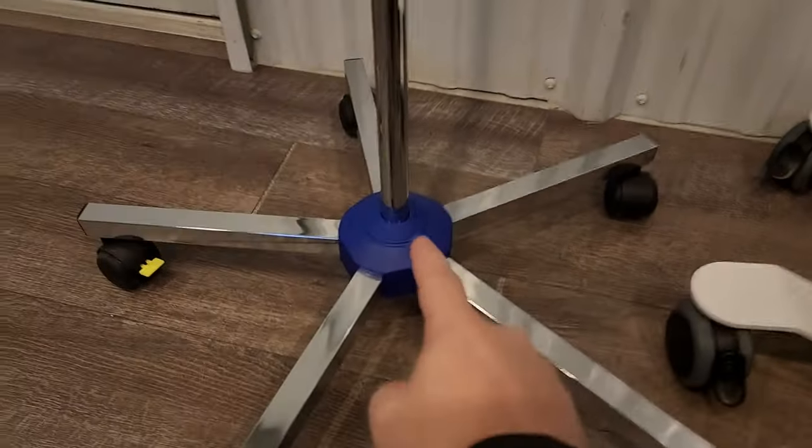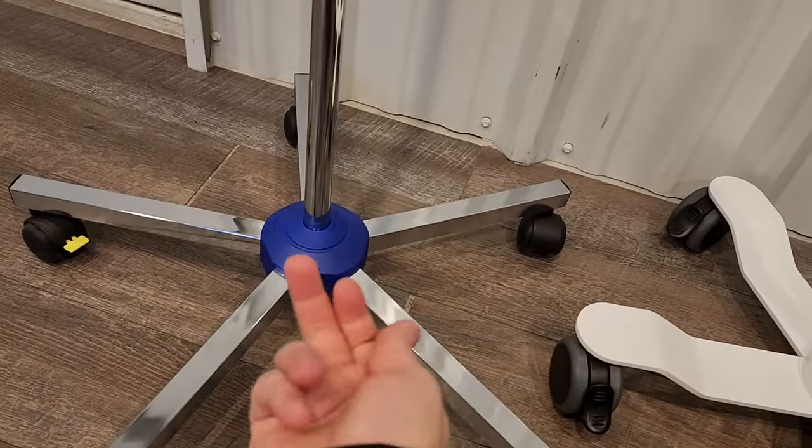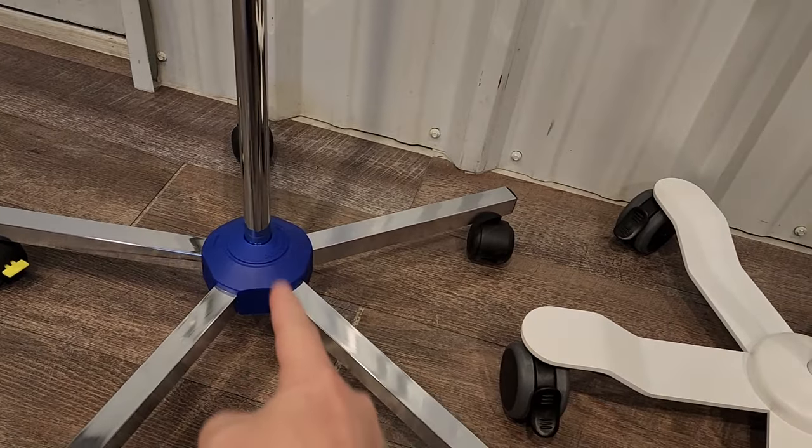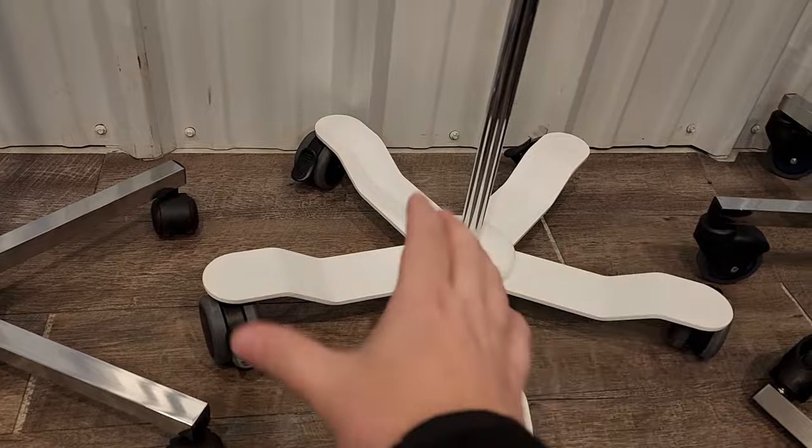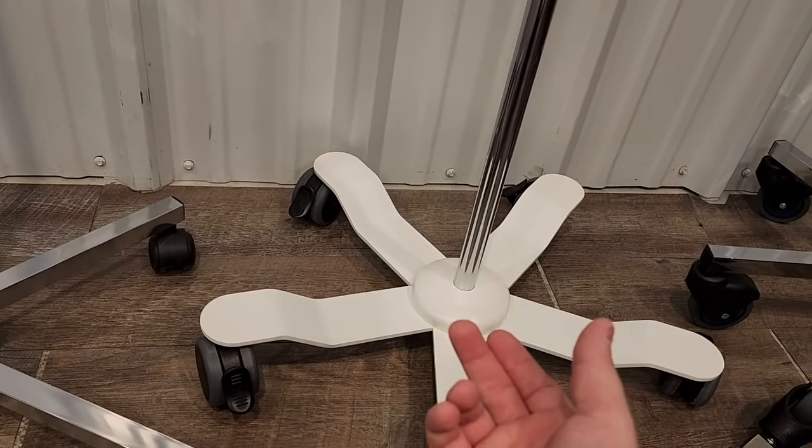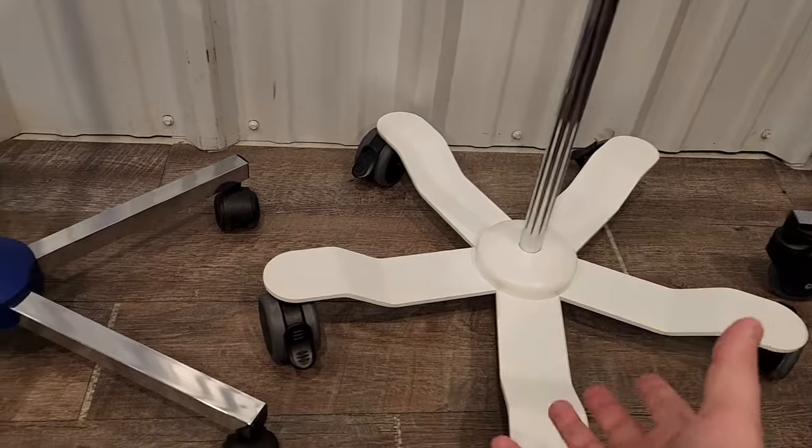And just the same, in the base, when you're putting your fastener in, make sure you put Loctite on all fasteners for IV poles because it's a piece that moves around, there's a lot of wobble, and when that happens, stuff comes loose. It's just the way it is.